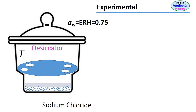A saturated solution can create a specific relative humidity atmosphere. For example, we have placed a saturated sodium chloride solution at the bottom of the desiccator. A layer of salt crystals at the bottom ensures the saturated condition during the experiment. Saturated sodium chloride can maintain a relative humidity atmosphere of 0.75, that is, a water activity of 0.75.